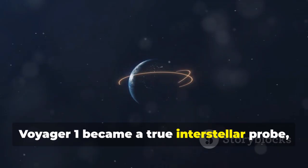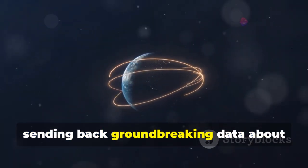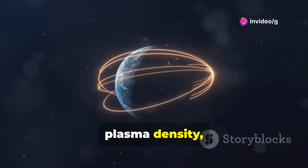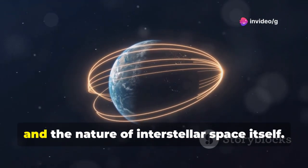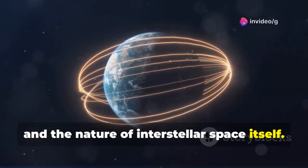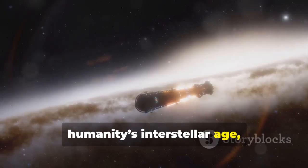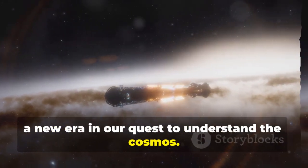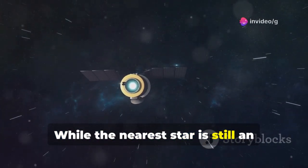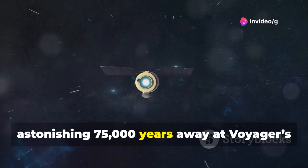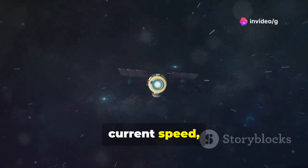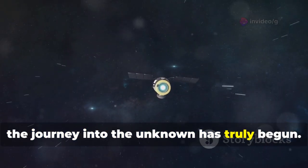Voyager 1 became a true interstellar probe, sending back groundbreaking data about plasma density, galactic magnetic fields, and the nature of interstellar space itself. Its crossing marked the dawn of humanity's interstellar age, a new era in our quest to understand the cosmos. While the nearest star is still an astonishing 75,000 years away at Voyager's current speed, the journey into the unknown has truly begun.